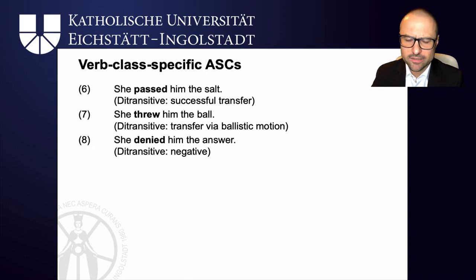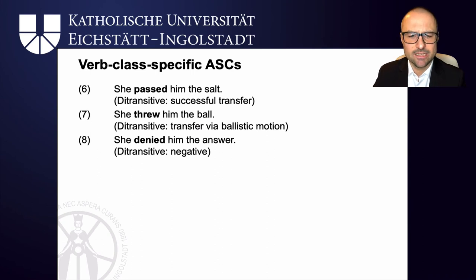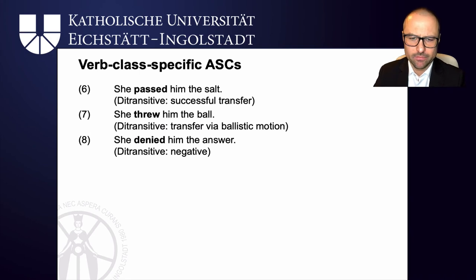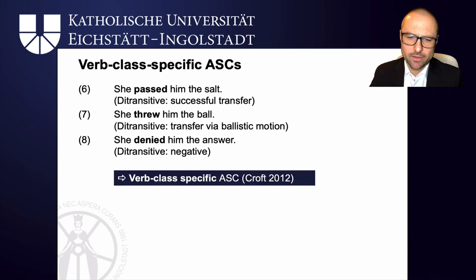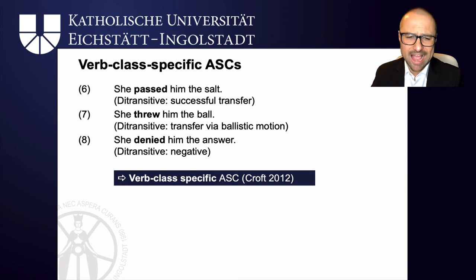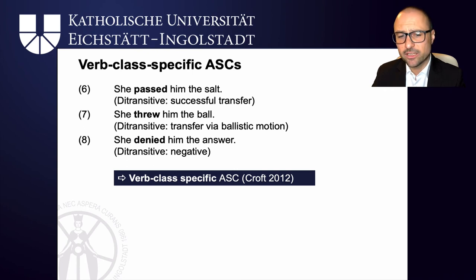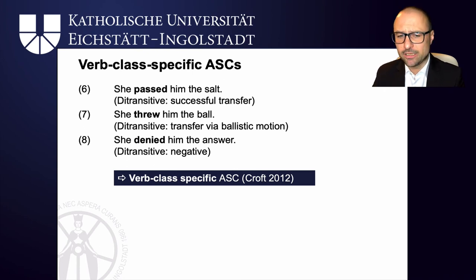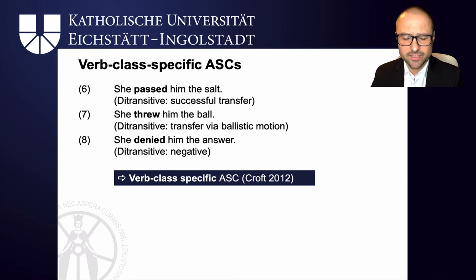We also have diatransitives which mean that the recipient doesn't get something. She denied him the answer means she made sure he didn't get the answer — the modulation here is negative. Billcroft therefore argues for verb-class-specific argument structure constructions. You can't just have a single abstract argument structure construction capturing all these meanings, because then a deny verb could have the meaning of successful transfer, and throwing could have some kind of negative denial meaning.